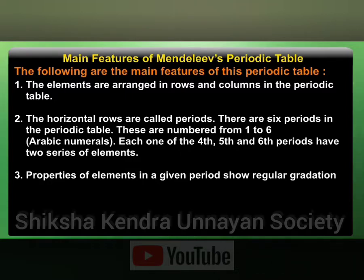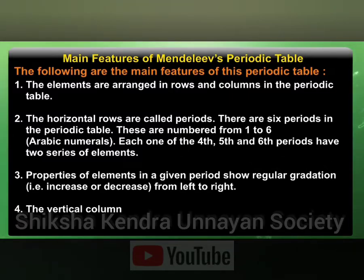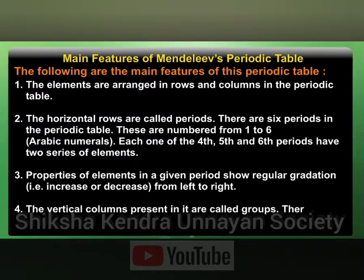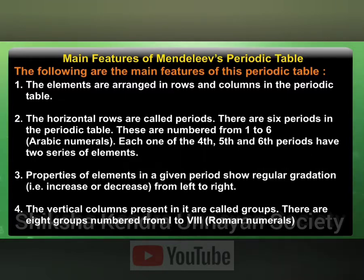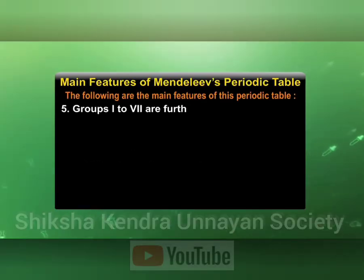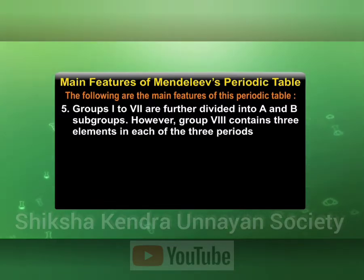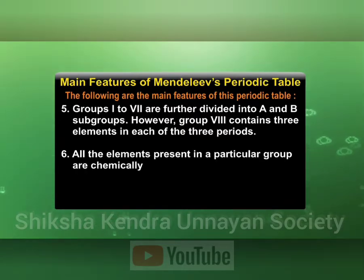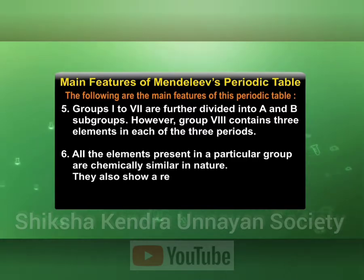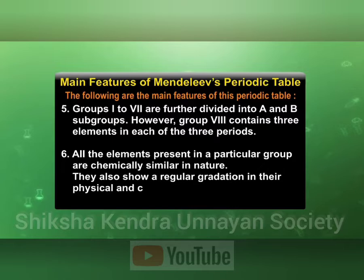Properties of elements in a given period show regular gradation, that is, increase or decrease from left to right. The vertical columns present in it are called groups; there are 8 groups, numbered from 1 to 8 in Roman numerals. Groups 1 to 7 are further divided into A and B subgroups. Group 8 contains 3 elements in each of 3 periods. All elements present in a particular group are chemically similar in nature and show a regular gradation in their physical and chemical properties from top to bottom.